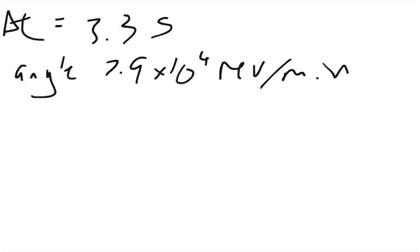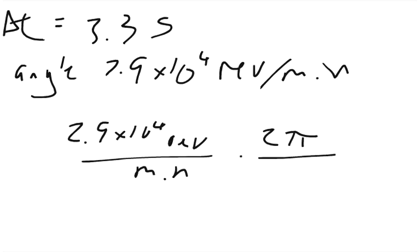And so the way we can set that up is 2.9 times 10 to the 4th revs over minutes. And we can times that by 2 pi radians over 1 revolution. And then we can times that by 1 minute over 60 seconds.